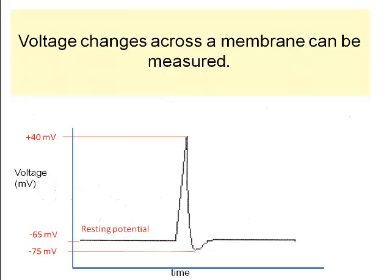At resting potential, the neuron is not conducting an impulse. Polarity exists. The distribution of ions results in a positive charge outside and a net negative charge inside, which accounts for the minus 65 millivolts resting potential.